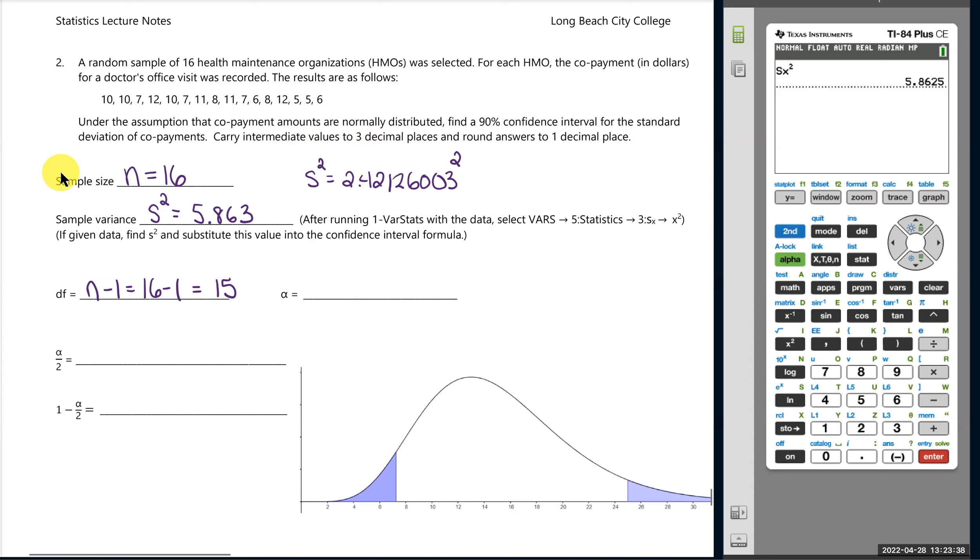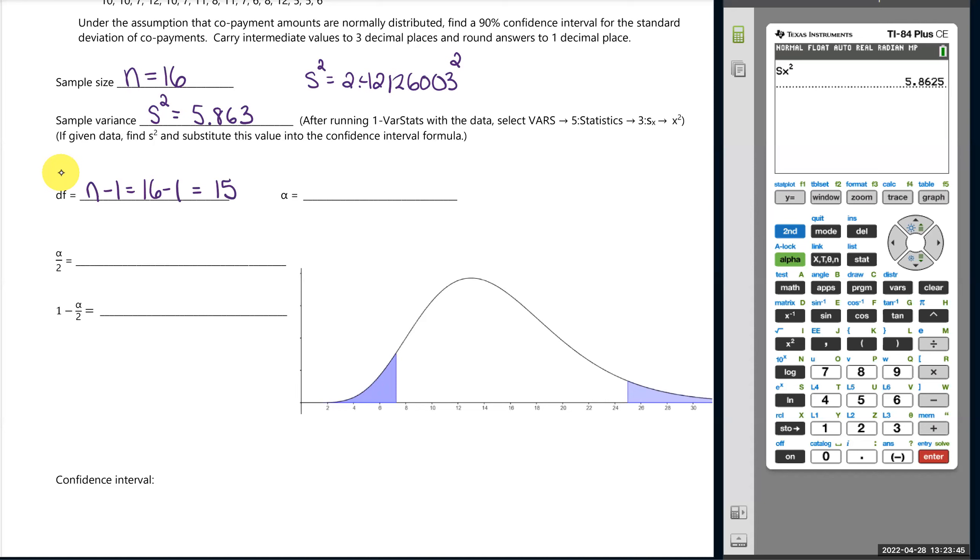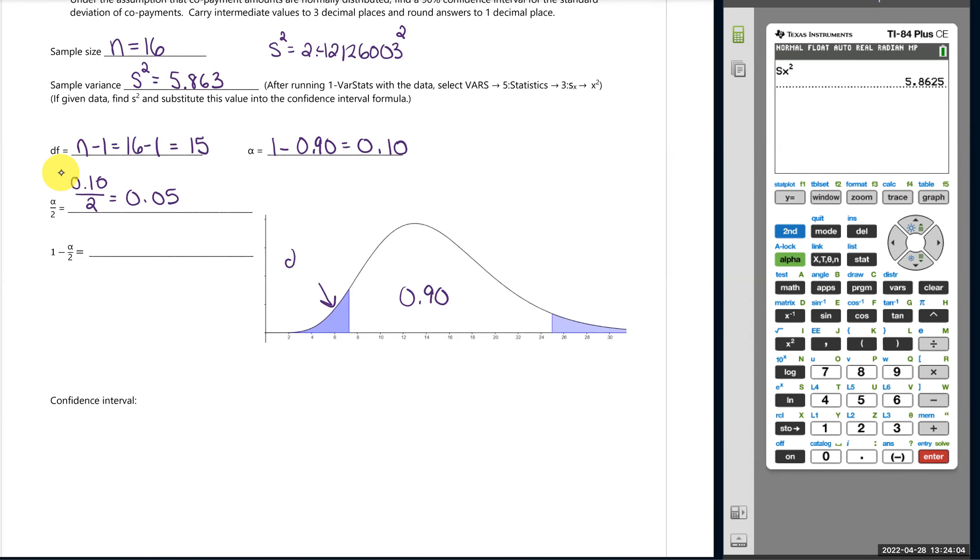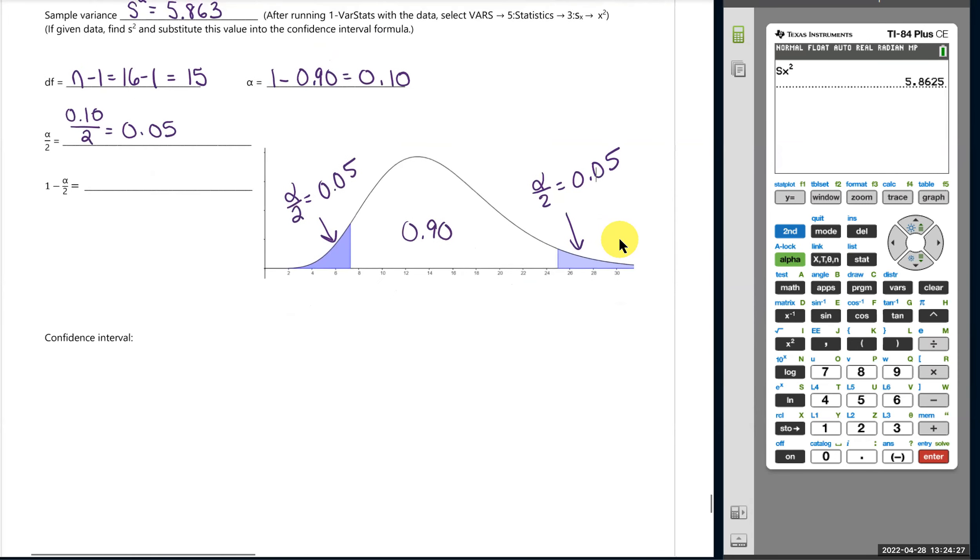We've got our S squared. And then let's complete our picture for the confidence. So we're looking for 90% confidence, and alpha is one minus our confidence level, so 0.10 or 10%. And then we divide that by two to get the area in each tail. So this area is alpha over 2, 0.05, and this area is alpha over 2, 0.05. You're just checking that you've separated the graph into three parts, and when you add up the three parts, you get one.